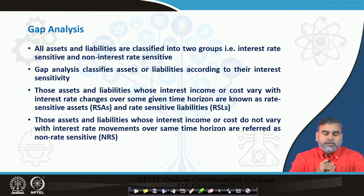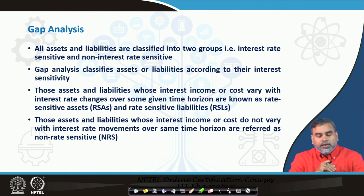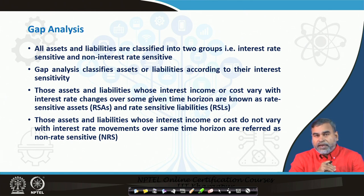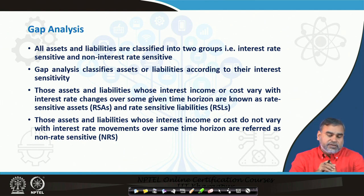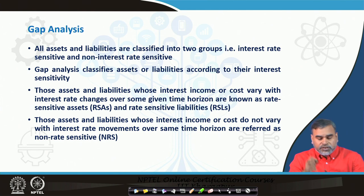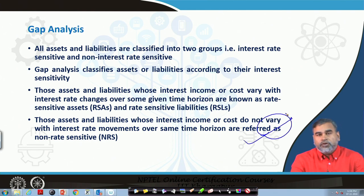Once classified, the assets that are rate sensitive are called Rate Sensitive Assets (RSA) and the liabilities that are rate sensitive are called Rate Sensitive Liabilities (RSL). The particular assets whose interest income or cost do not vary with the interest rate over the time horizon are called Non-Rate Sensitive (NRS). They are not sensitive to fluctuations in interest rates. We have interest sensitive assets, interest sensitive liabilities, non-rate sensitive assets and liabilities.